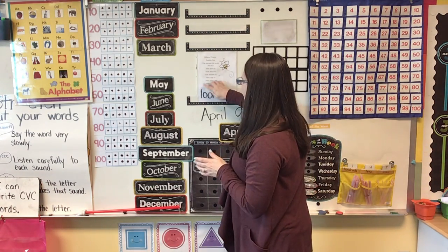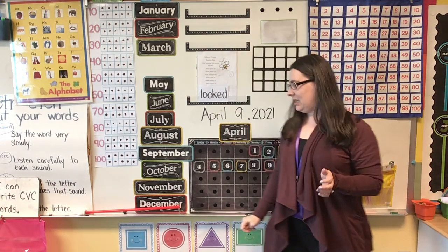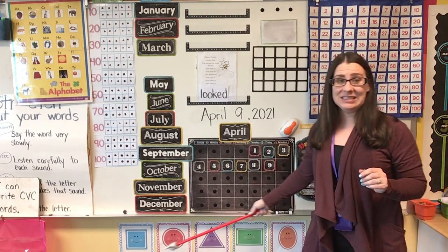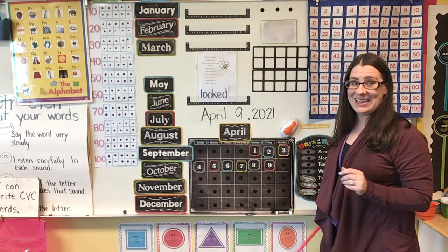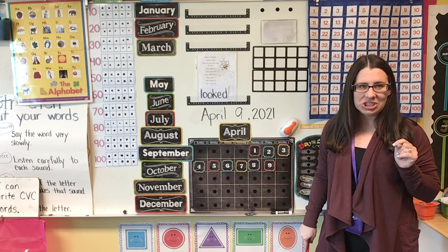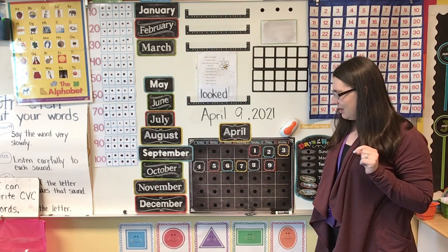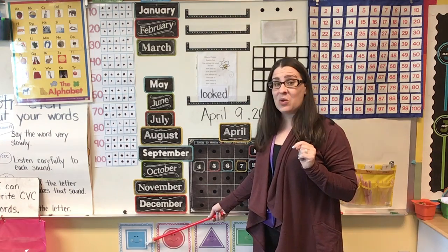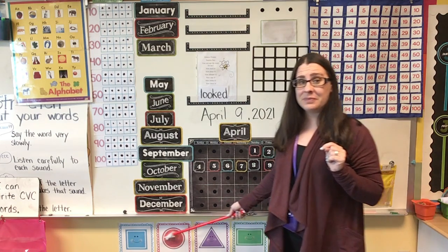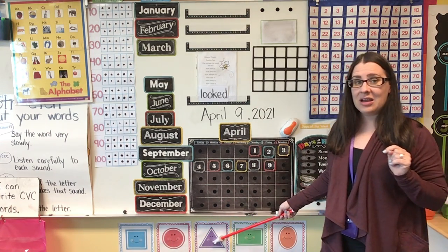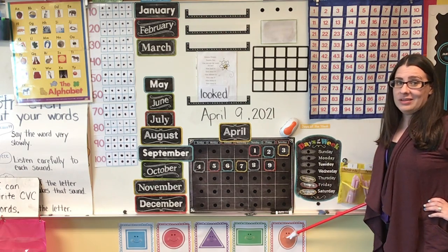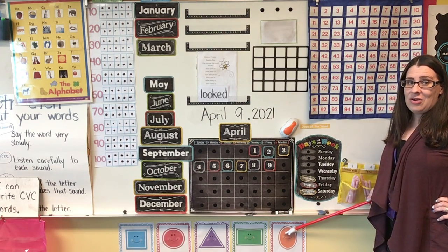A long time ago we learned about our 2D shapes, and you'll see they're right here. We're actually going to do a shape hunt during calendar today. Let's review what these shapes are: we have a square, a circle, a triangle, a rectangle, and an oval.